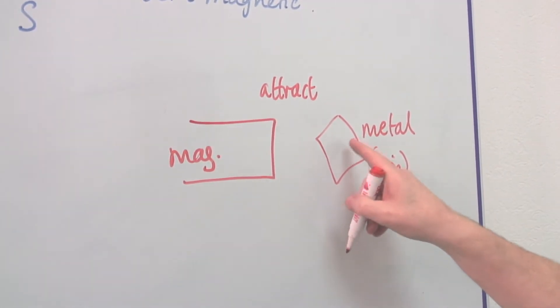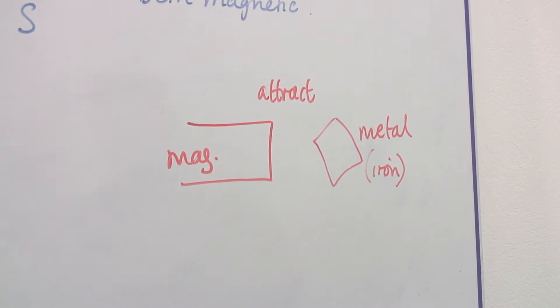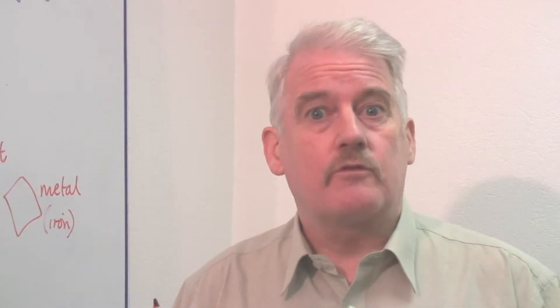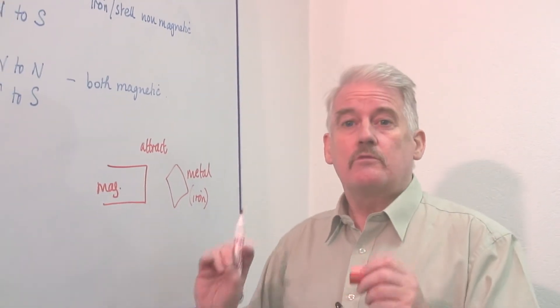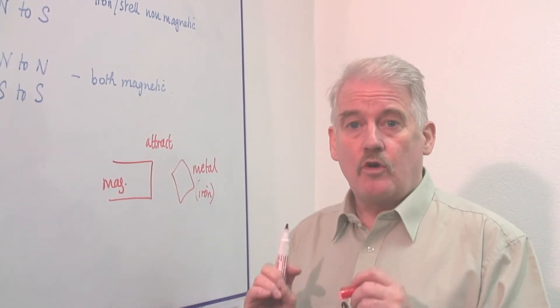Only if this is magnetic will we get repulsion. So the answer is electromagnets, electromagnets themselves will repel each other. But they will never repel a piece of metal unless it is also magnetic.